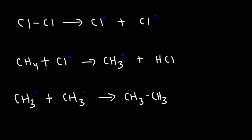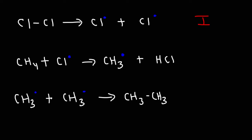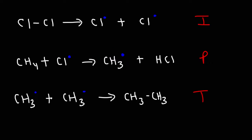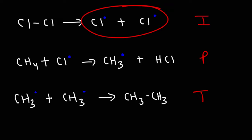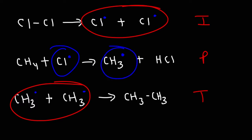The first step is initiation. Whenever you have a neutral molecule turning into two radicals, that step is called initiation — anytime you have two radicals on the right side of the equation. During propagation, you have one radical on the left and one radical on the right. Termination occurs anytime you have two radicals on the left. So: two radicals on the right = initiation; two radicals on the left = termination; a radical on the left and a radical on the right = propagation.